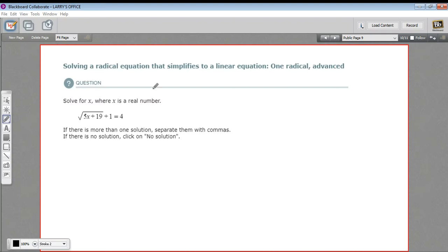In this problem, we have a radical equation, and by that I mean an equation where we have a square root or a radical sign. The general approach with these is to try to get the radical by itself on one side of the equation, and then square to get rid of the square root sign.